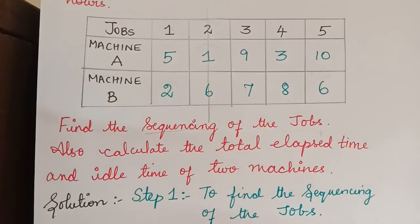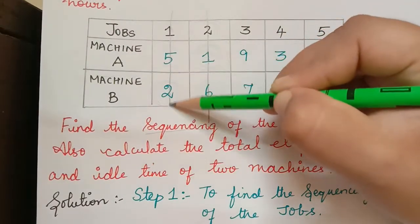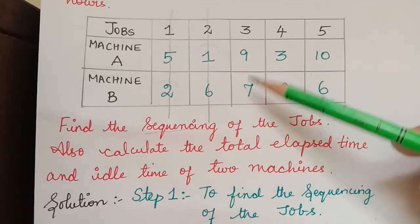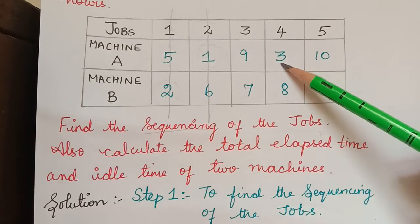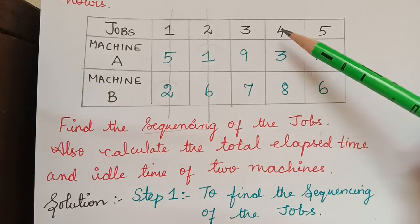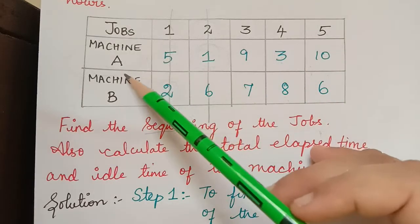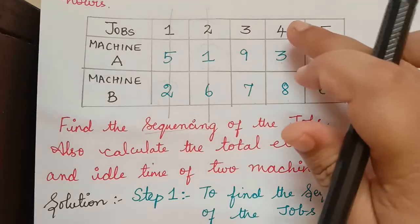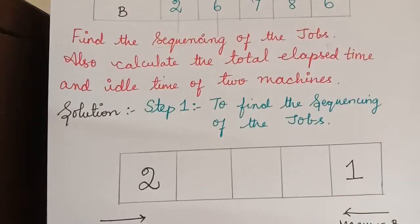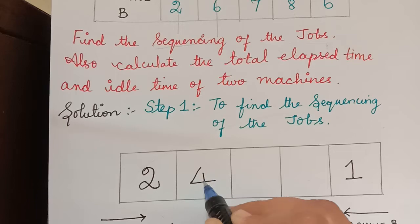We have to write job 1 under machine B, so it should be from right to left — job 1 is written on the right side. Then the remaining values are checked, and the least is 3. The job corresponding to 3 is job 4, and this least value is from machine A. So we write job 4 from left to right — it comes next after job 2.